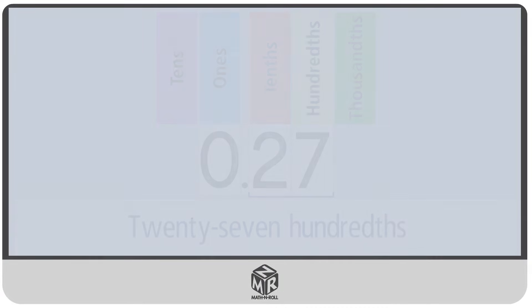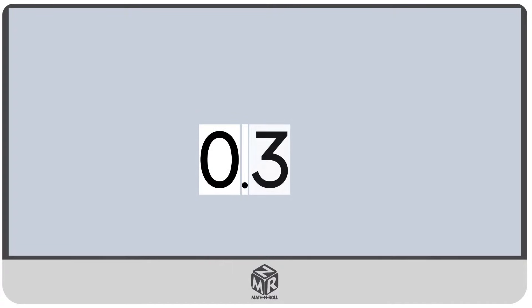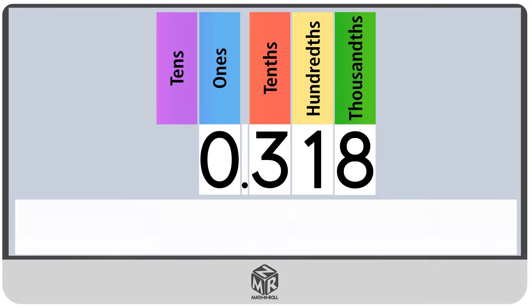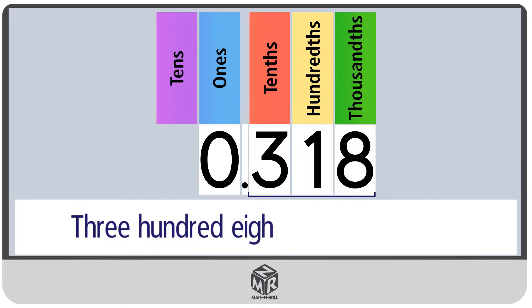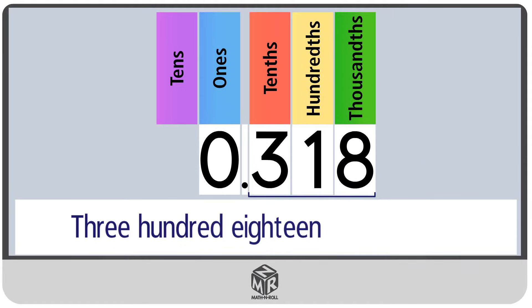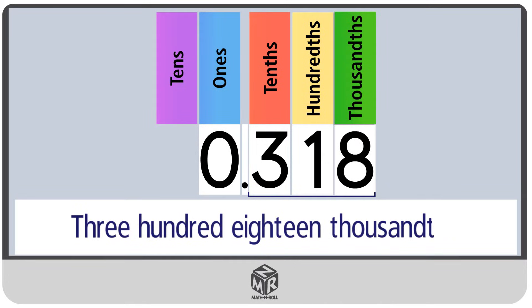Let's do another example. 0.318. Because we don't have a whole number, we move on to the decimal part. We write the decimal part as 318. Now take a look at the place value of the last digit. The last digit is 8, and it's in the thousandths place. So after the words 318, we write the word thousandths.